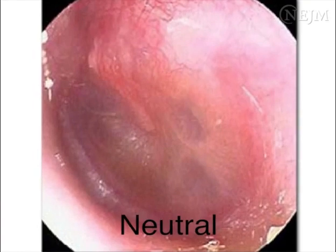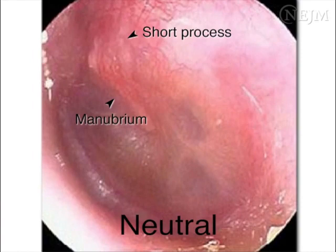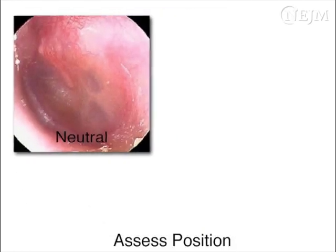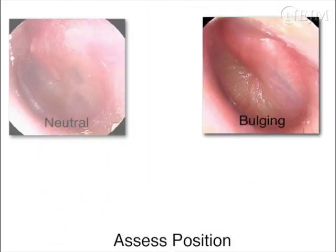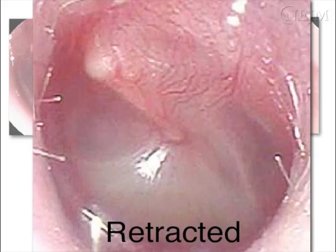Assess the position of the tympanic membrane by visualizing the manubrium and short process of the malleus. When the tympanic membrane is in the neutral position, the manubrium and the short process are clearly visible. When the tympanic membrane is bulging, the short process is not visible and the tympanic membrane appears convex. When the tympanic membrane is retracted, the manubrium appears foreshortened and the short process appears prominent.